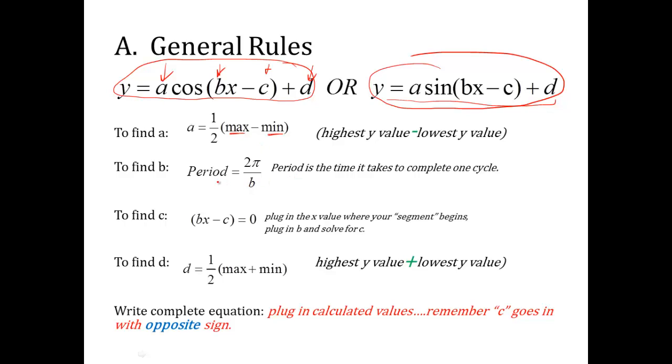To find b, it involves the period. So remember, period is the time it takes to complete one cycle. You could measure a cycle peak to peak, or trough to trough. Either way, you're going to get the same length. So you measure that period number and set that value equal to 2 pi over b and solve it for b.